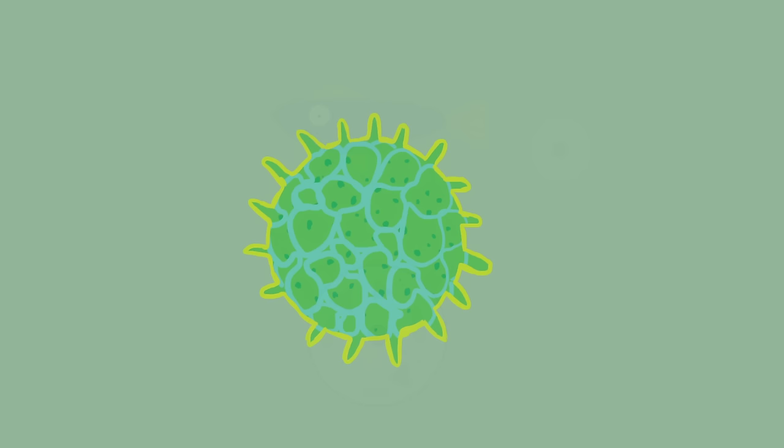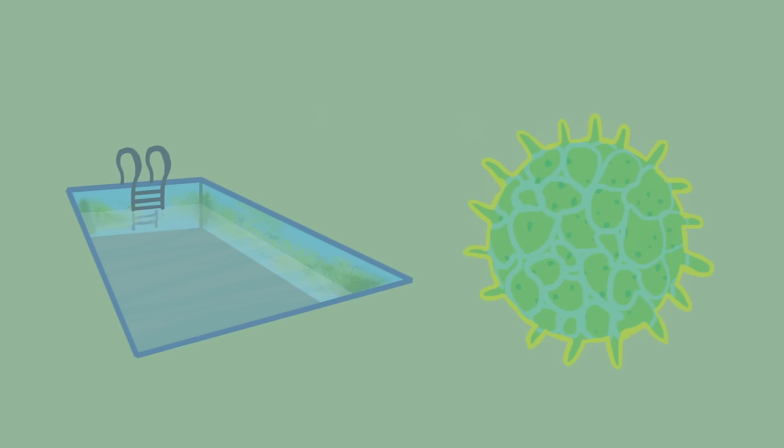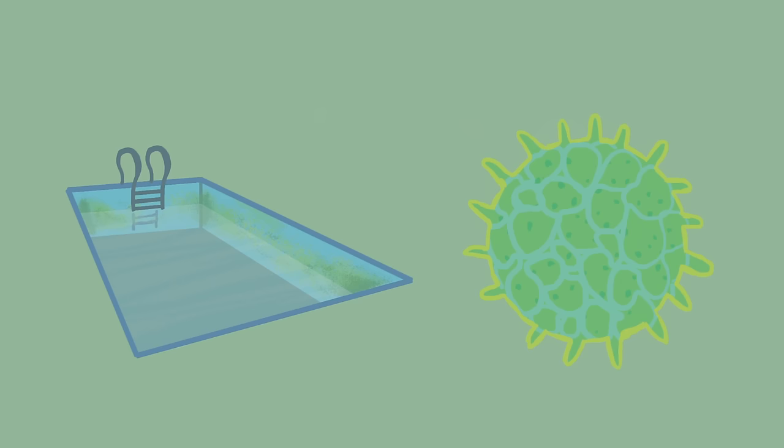Biologists now use this theory to explain the origin of the vast variety of eukaryotic organisms. Take the green algae that grow on the walls of swimming pools.